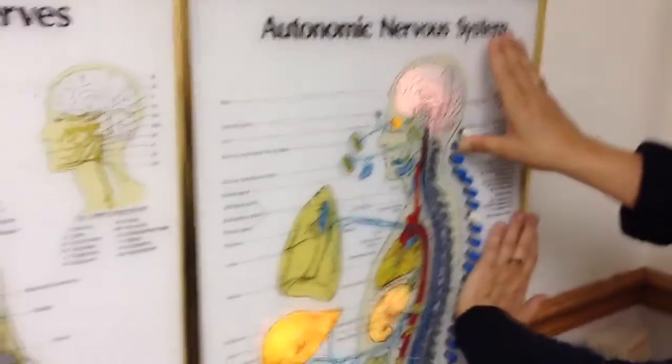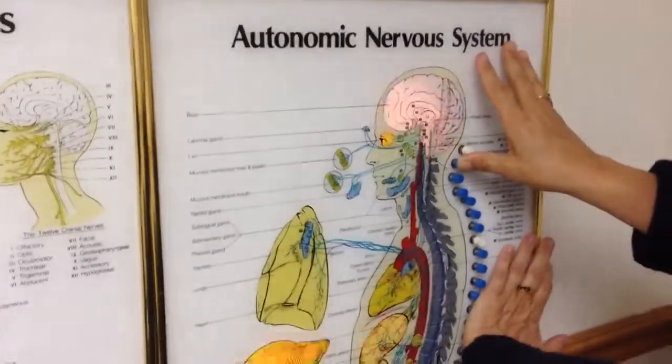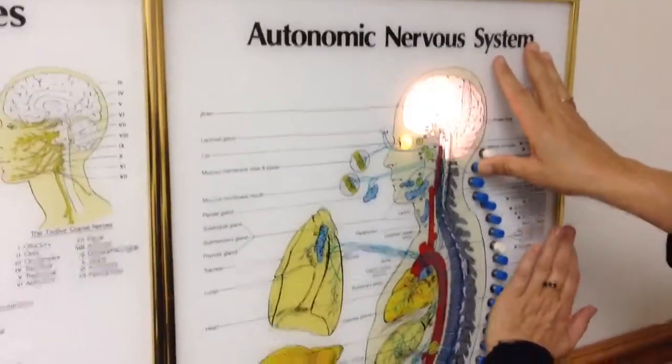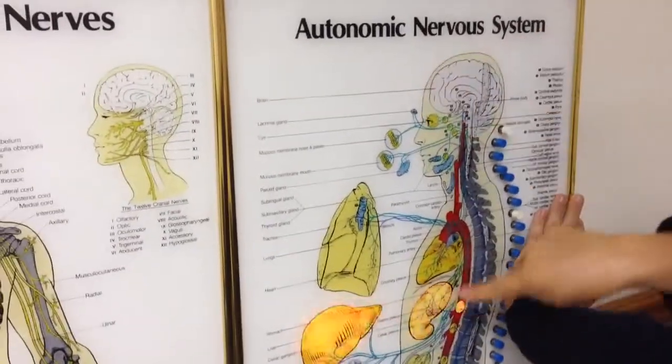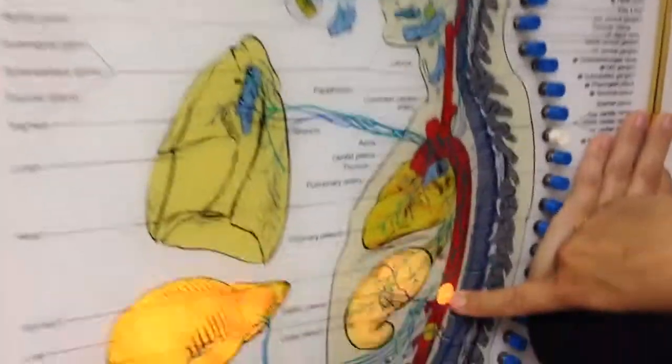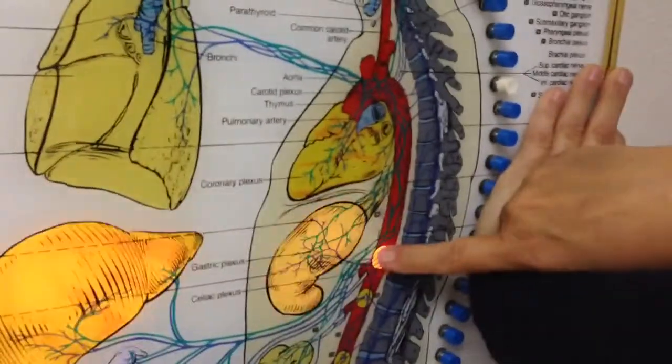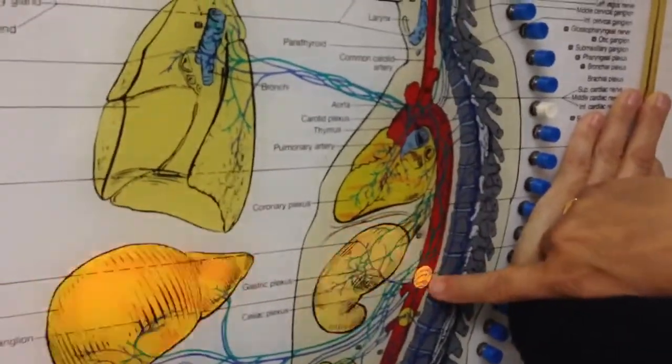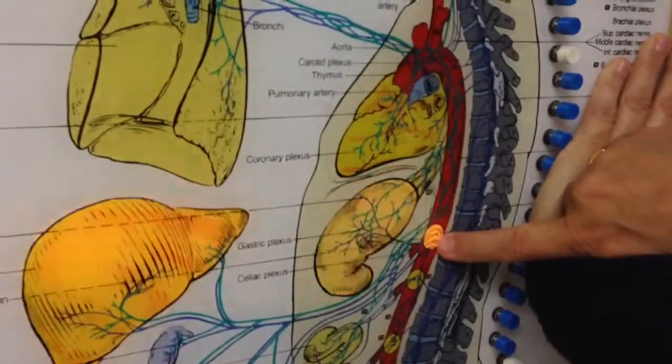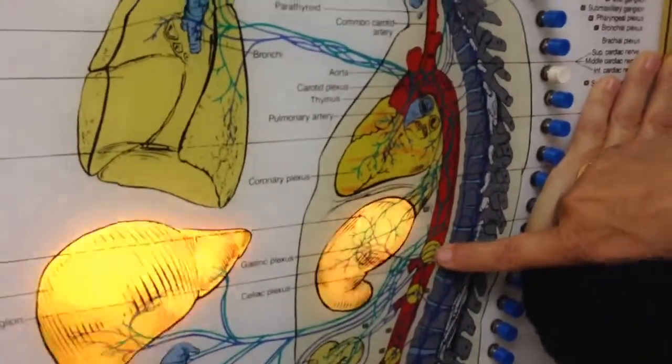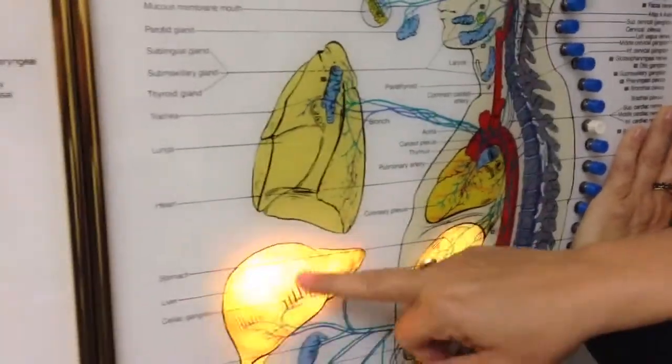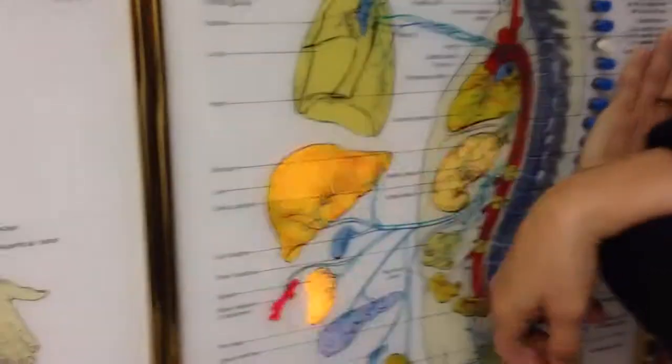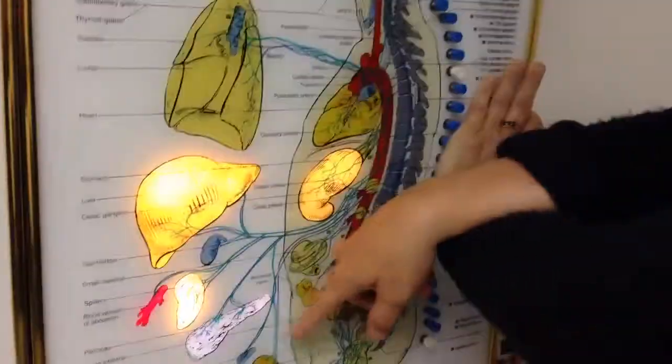Now we're going to come over here on the autonomic nervous system and we're going to look at where does the vagus nerve come in and supply the stomach. Well, Dr. Craig is going to pan down in right here and this is the connection. Do you see those little lines? That's telling us that this is where the electricity sparks at. And what does it directly affect? It affects the gallbladder, the stomach, the liver, the spleen, the pancreas.